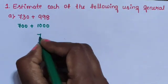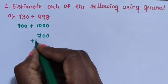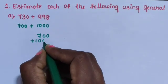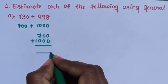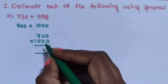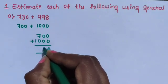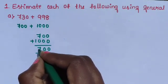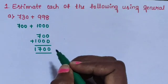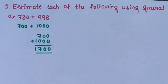Add these two numbers: 700 plus 1000. The total answer is 1700.